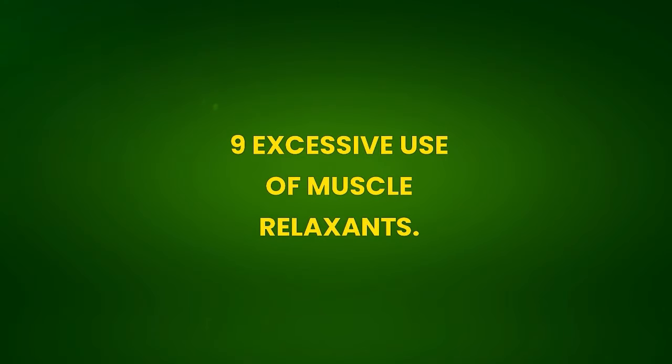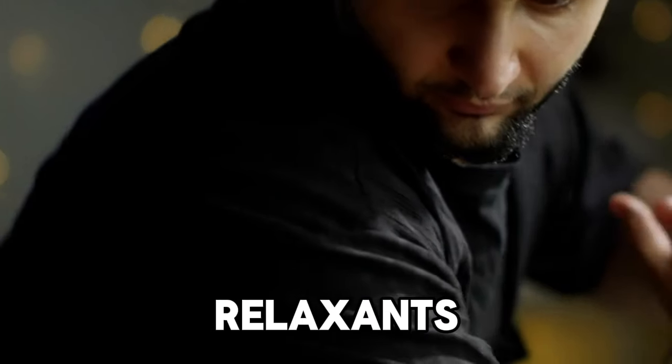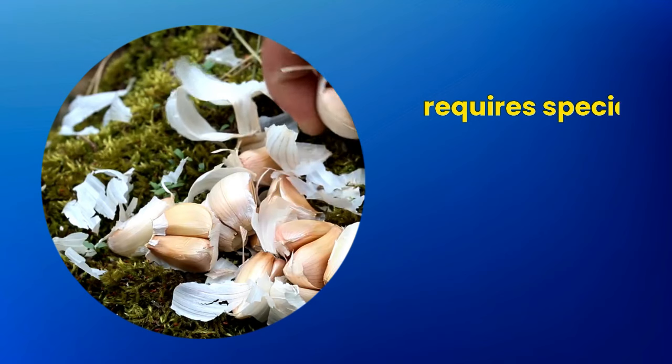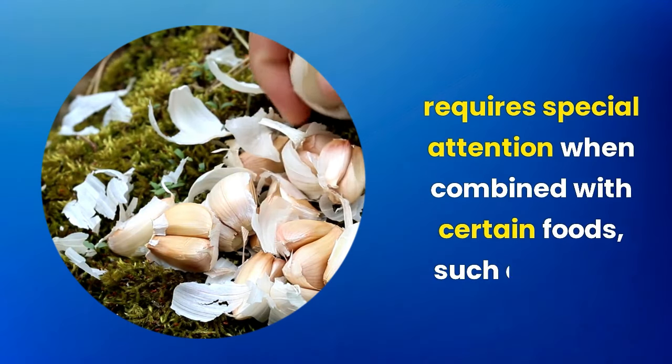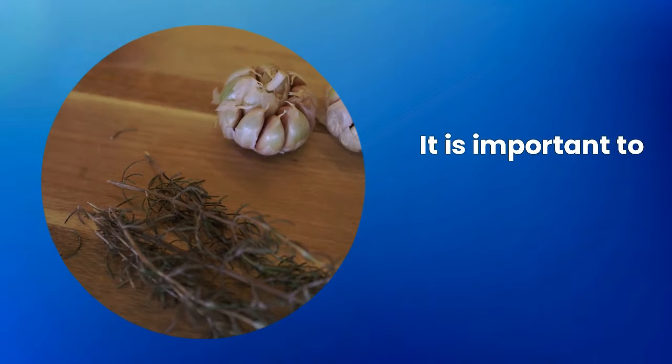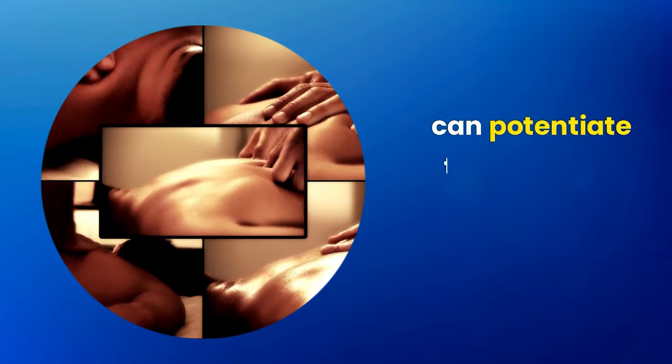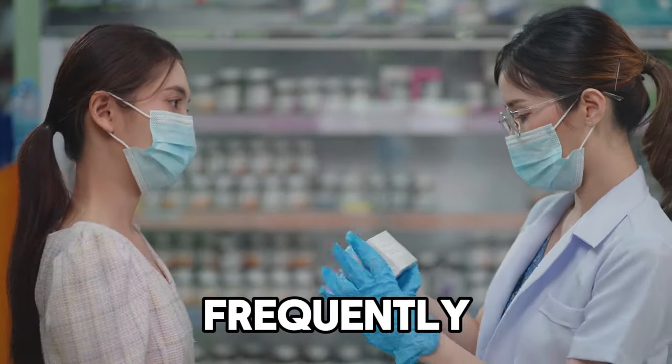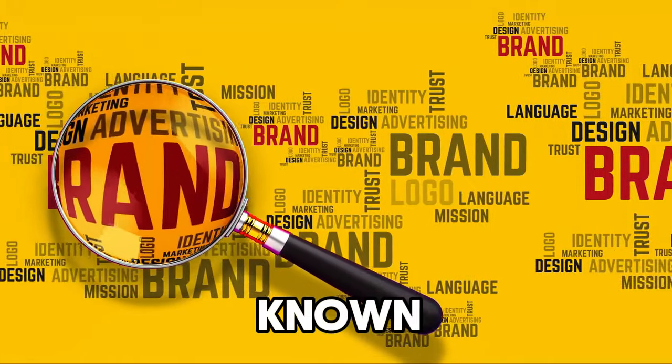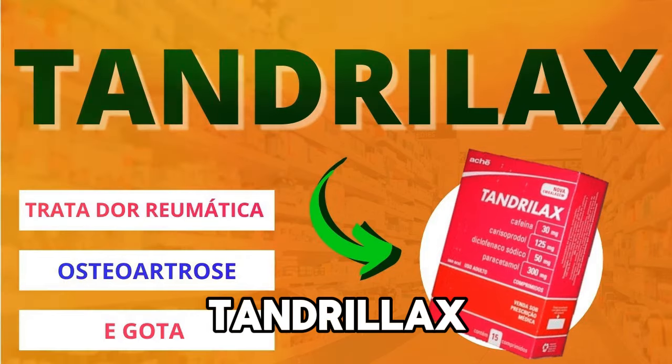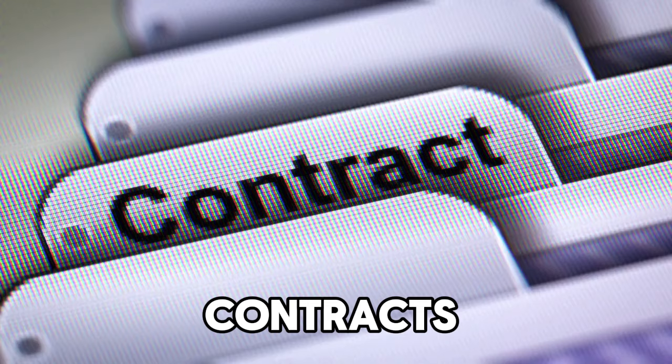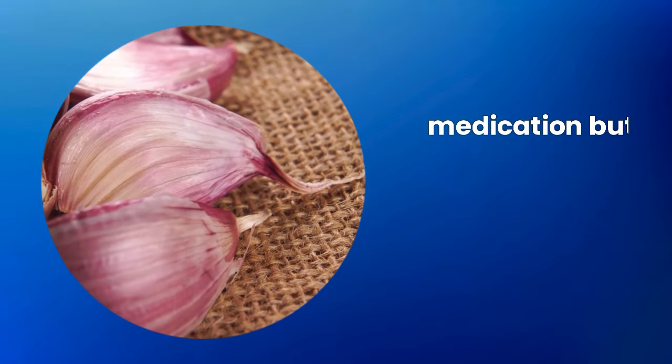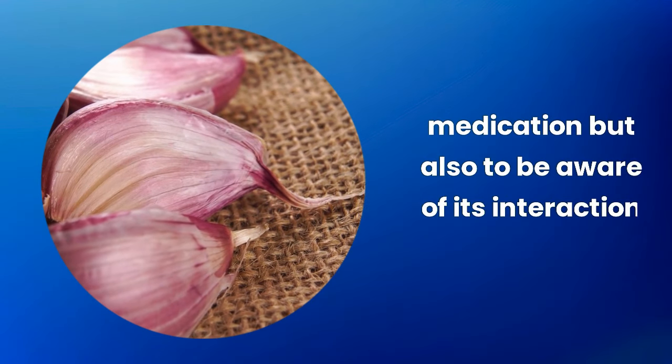9. Excessive use of muscle relaxants. The use of muscle relaxants, which are common in the treatment of muscle tension, requires special attention when combined with certain foods, such as garlic. It is important to be aware that garlic can potentiate the effects of some muscle relaxants, which can be a concern for those who use them frequently. Among the various well-known brands available on the market, such as Tandralax, Meoflex, 3Musk, Contracts, and Dorflex, it is essential not only to choose the appropriate medication, but also to be aware of its interaction with garlic.